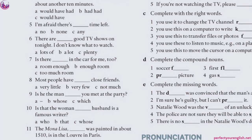Number 6: 'There are lots of good TV shows on tonight. I don't know what to watch.' 'To be on' means a program is broadcasting on TV. 'Be' alone is wrong. 'A lot' needs 'of' after it. 'Plenty' also needs 'of.' So 'lots of' is the only correct option — A.